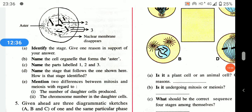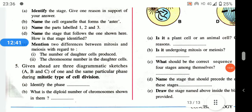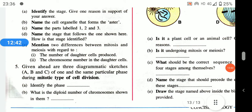Mention two differences between mitosis and meiosis: the number of daughter cells produced — in mitosis it is two, in meiosis it is four. The chromosome number in daughter cells — in mitosis it remains the same, in meiosis it is reduced to half.